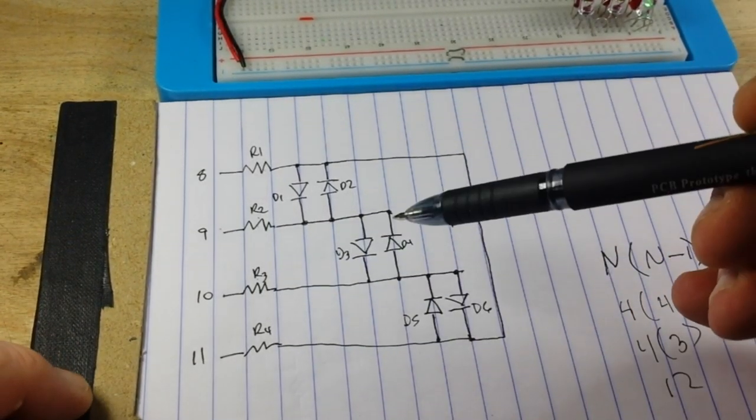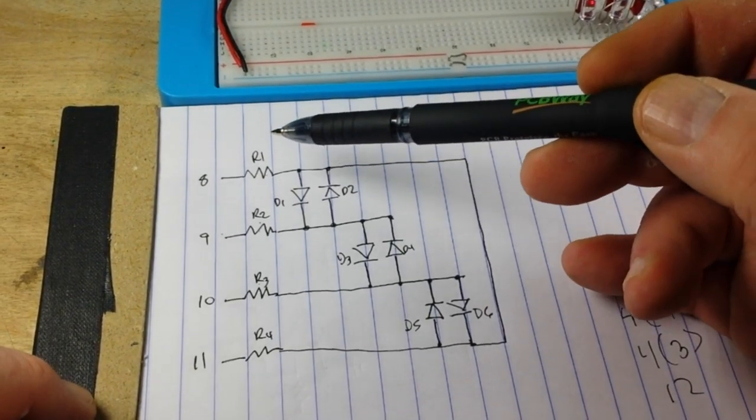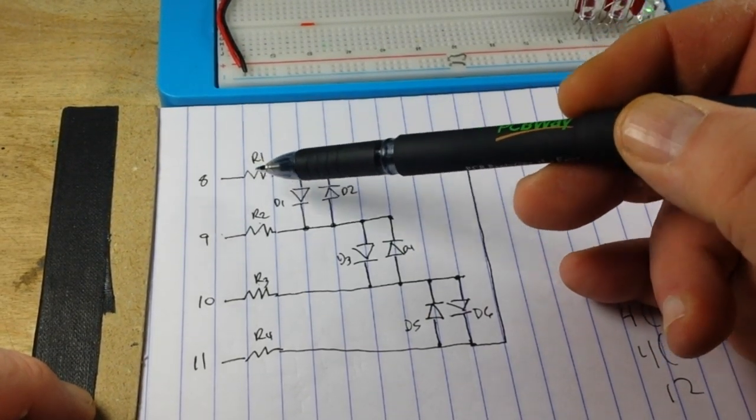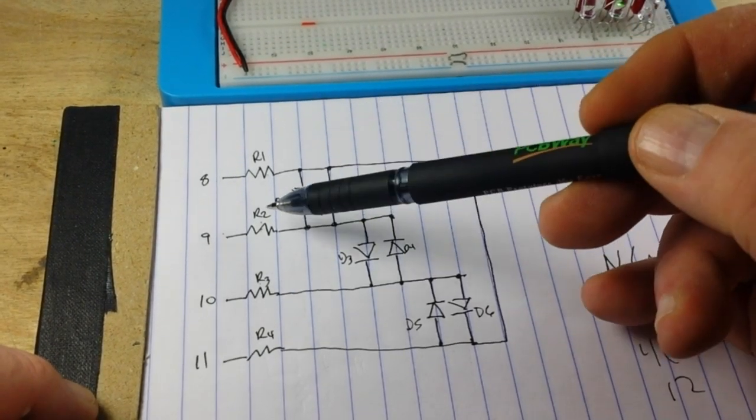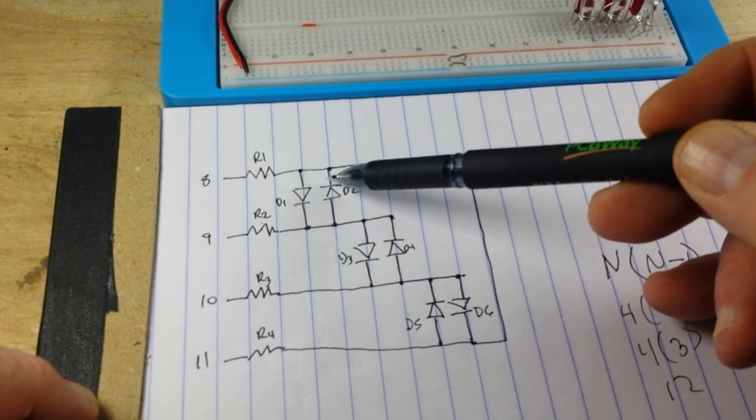Because what we're doing here with our programming is we're saying, make this pin high, make this pin low, this one lights up. Make this pin high, make this pin low, this one lights up.